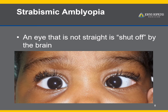Strabismus is the misalignment of the eyes. Strabismic amblyopia occurs when the misaligned eyes present two different images to the brain. To avoid seeing double, the brain shuts off the image from the eye that is not straight. This turning off of the eye is called suppression. Over time, repeated suppression of one eye results in strabismic amblyopia.